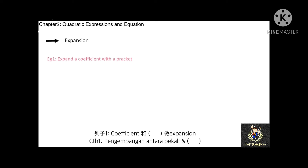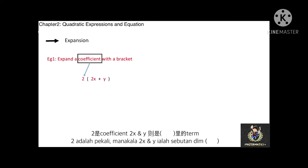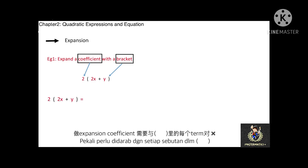Example 1: expand a coefficient with a bracket. In this example, 2 is the coefficient and the bracket contains the term 2x plus y. To expand a bracket with a coefficient, the coefficient is multiplied to each and every term within the bracket. The coefficient 2 multiplied with 2x, plus the coefficient 2 multiplied with y. 2 times 2x equals 4x, and 2 times y equals 2y. The expansion equals 4x plus 2y.